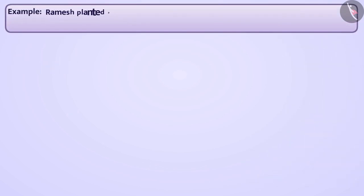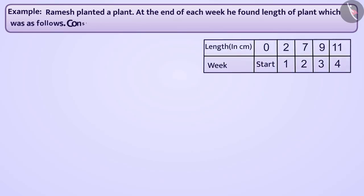Ramesh planted a plant. At the end of each week, he found the length of the plant which was as follows. Consider scale as 1 unit is equal to 2 cm. Represent the given information in a line graph.